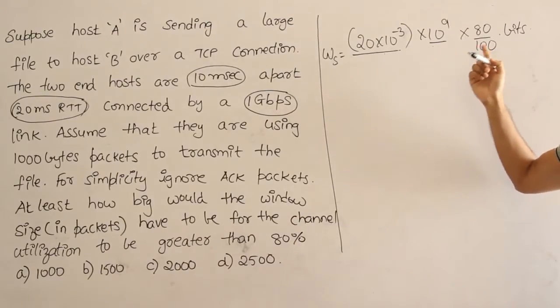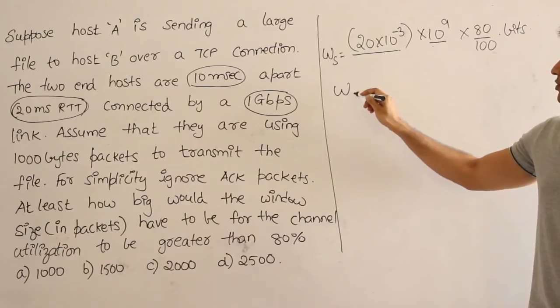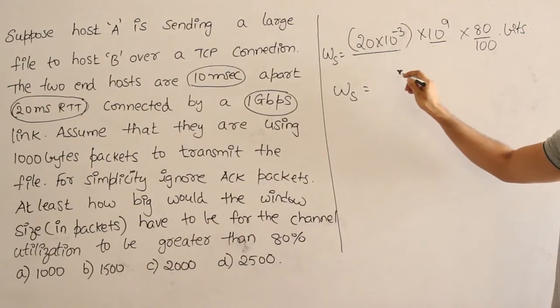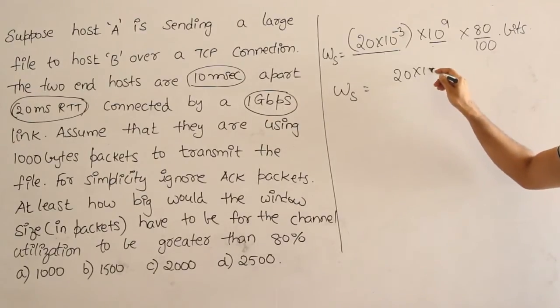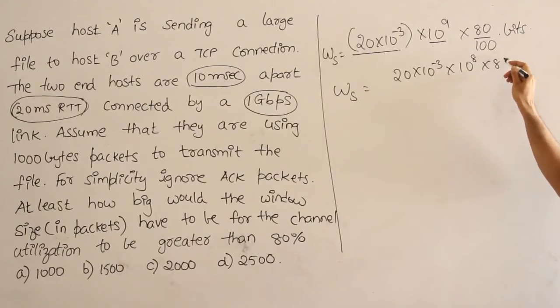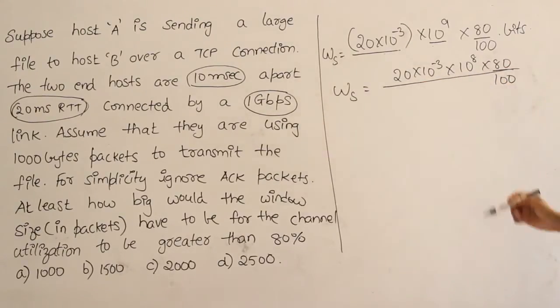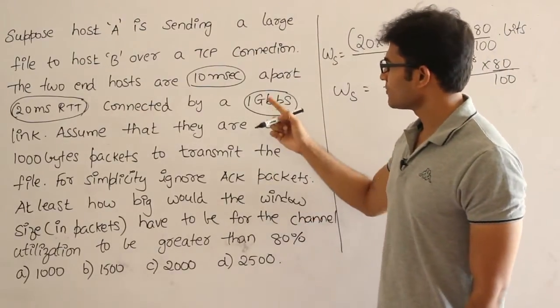So if this is the window size in bits then window size in packets will be: take this entire number which means 20 into 10 power minus 3 into 10 power 8 into 80 by 100, take this entire number and divide it with size of the packet. Size of the packet is given as 1000 bytes.